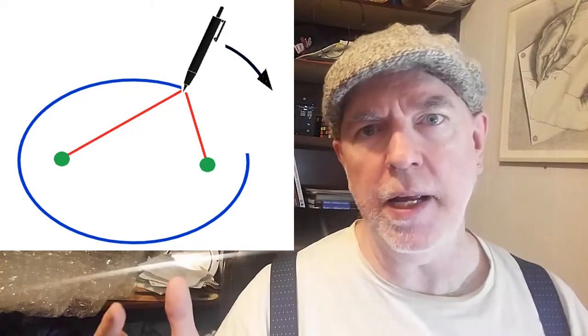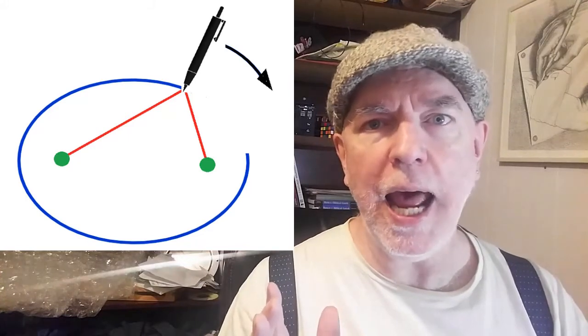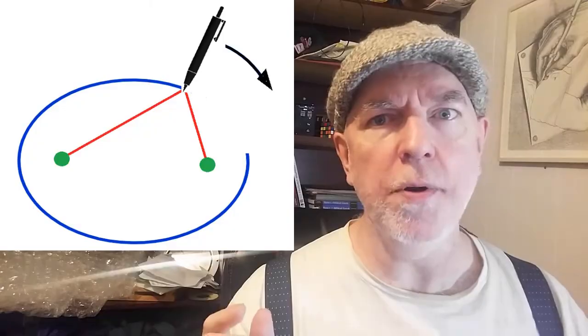This activity creates the same curve as the angled cross section of a cone. But why? Why should these two seemingly different processes produce the same result?